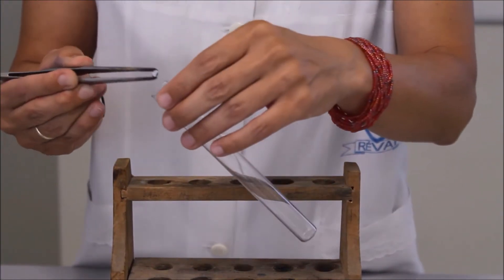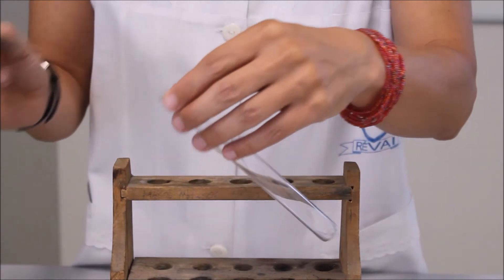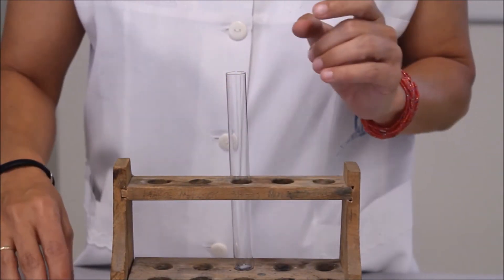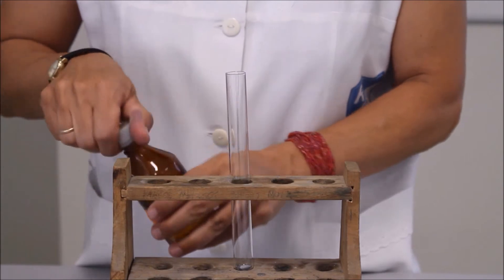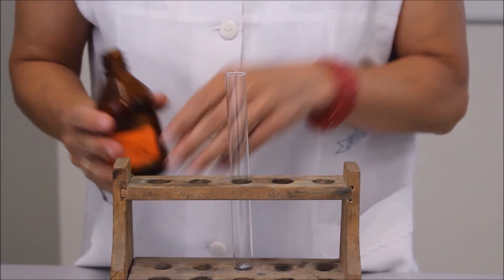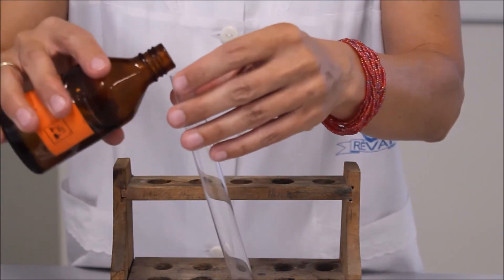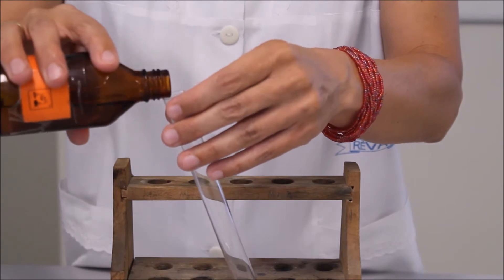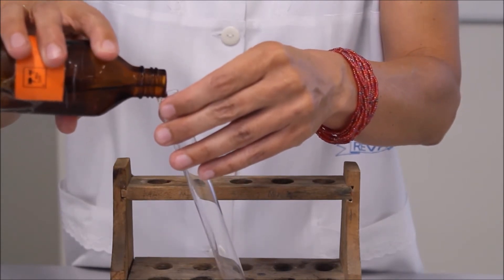Tehát nézzük közelebbről a kísérletet. Finoman engedem bele a cink darabkát, hogy ki ne üsse a kémcső fenekét, mert már bizony fordult elő ilyen. Kis diák panaszkodott, hogy húj, ki a sósav.